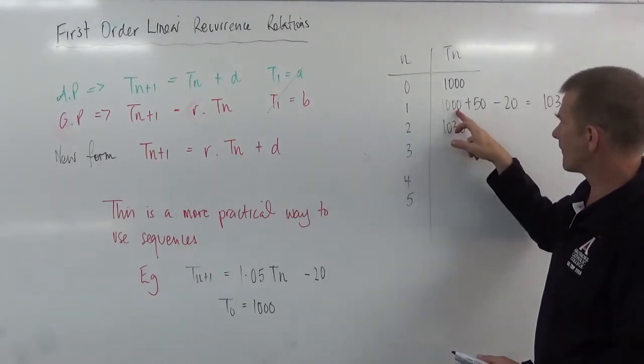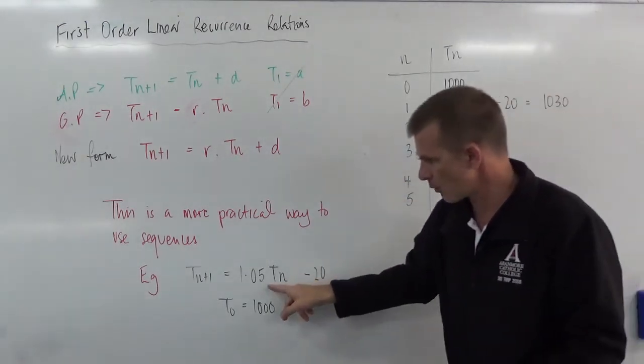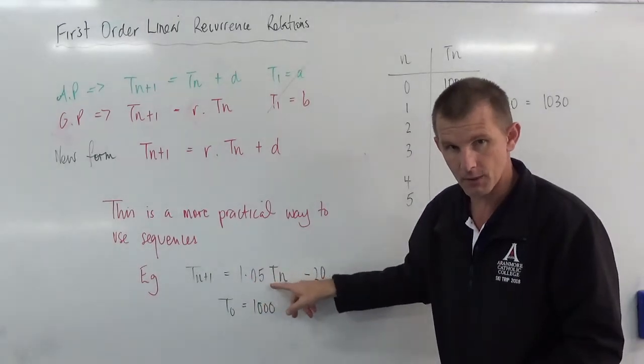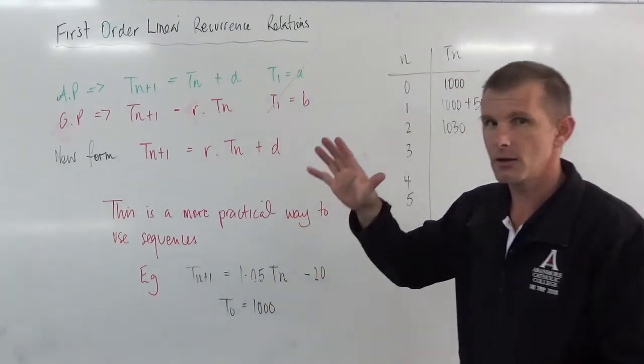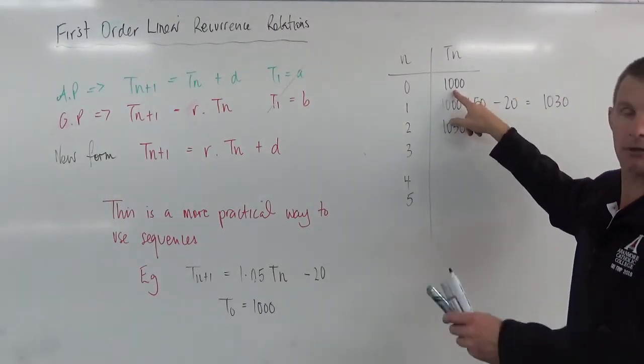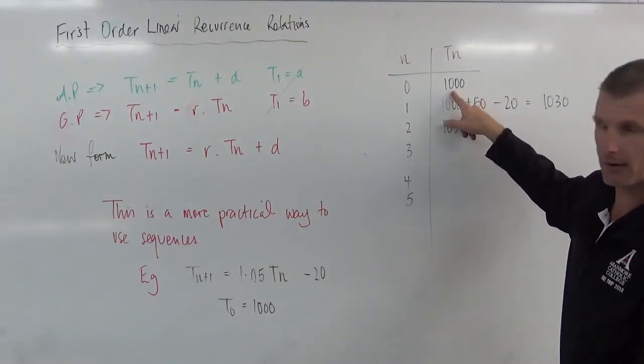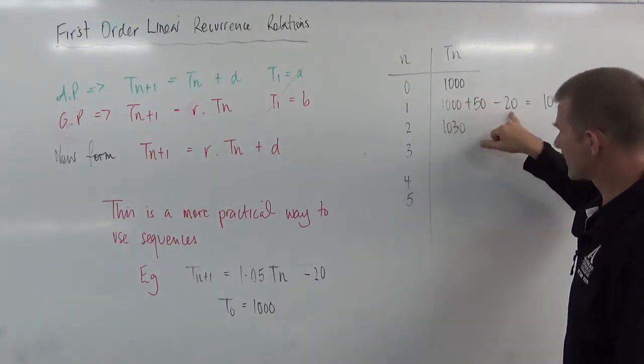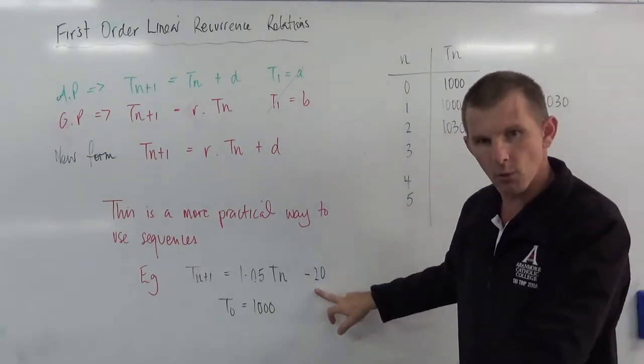T1. So we're going to have 1,000 plus 50. That's me working out the 5%. To work out 5%, divide it by 10, divide it by 2. Divide by 10 gets me 100, divide by 2 gets me 50. That's 5%. And then the minus 20 is the ones that don't make it.